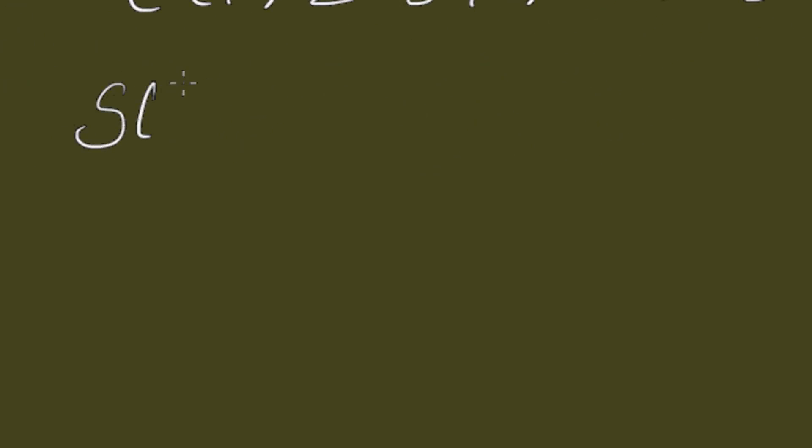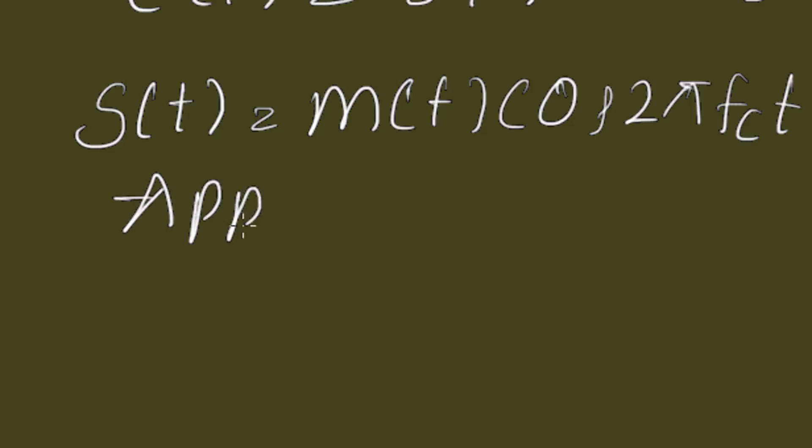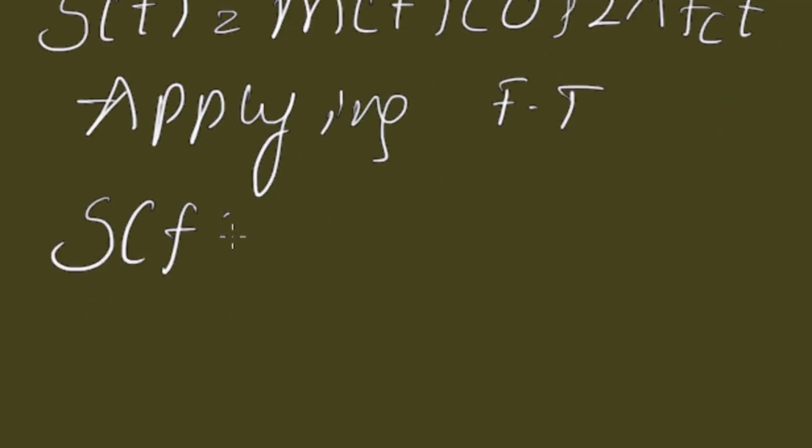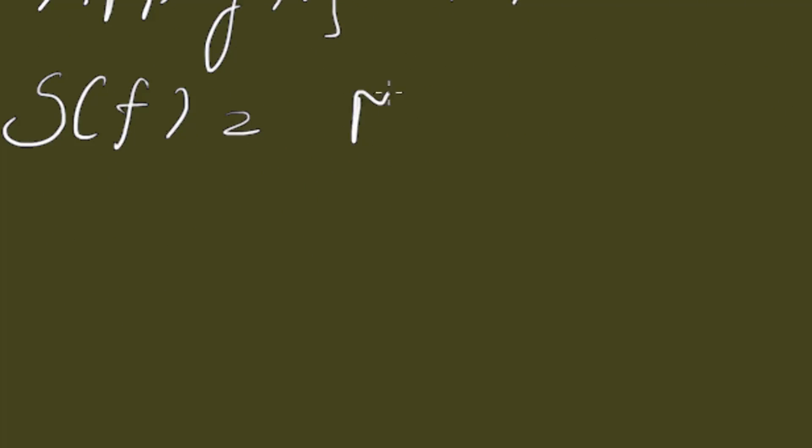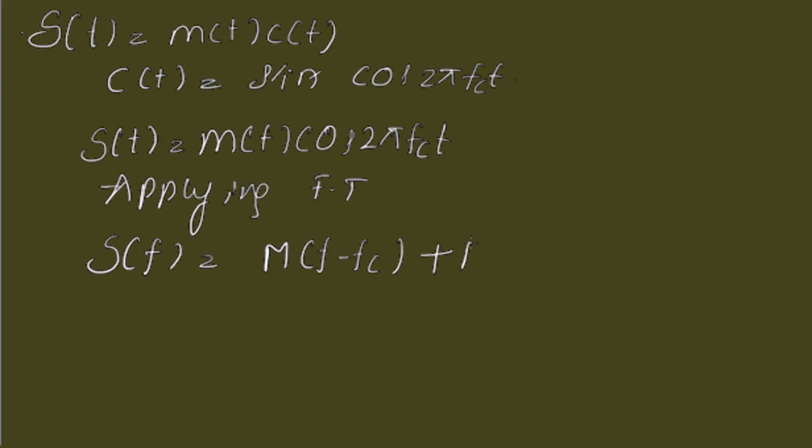Then, S(t) is equal to M(t) into cos 2πfct. Now, applying Fourier transform on both sides, trying Fourier transform. So, S(f) is equal to M(f-fc) plus M(f+fc). This is 1 by 2.